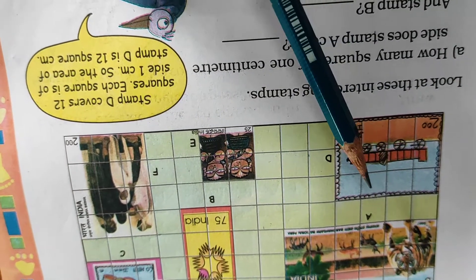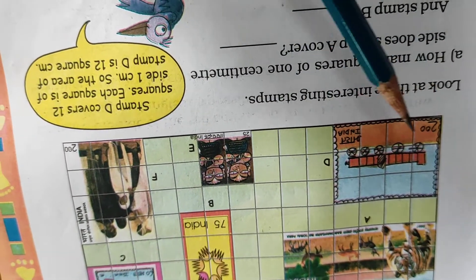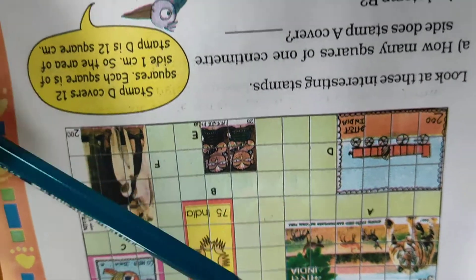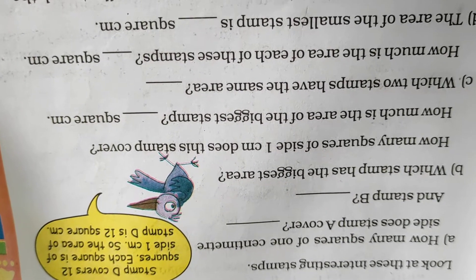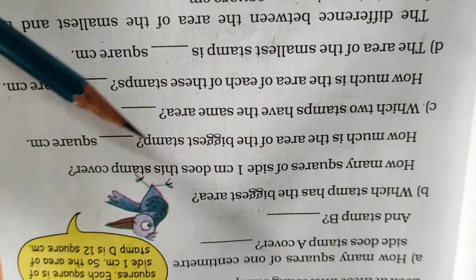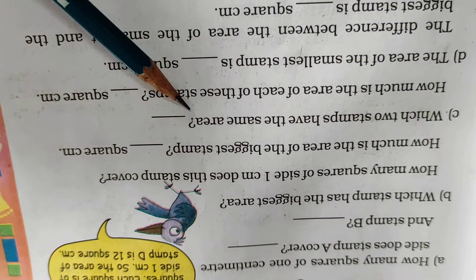Here 1, 2, 3, 4, 5, 6, 7, 8, 9, 10, 11, 12. So this. And how much is the area of the biggest stamp? We have to write 18 square cm. Which two stamps have the same area?